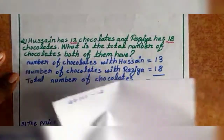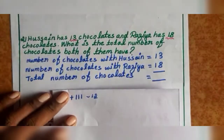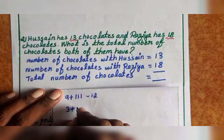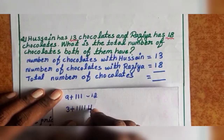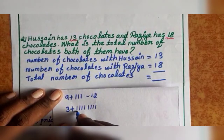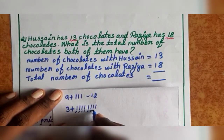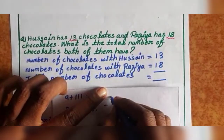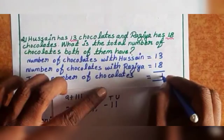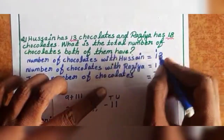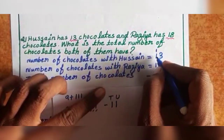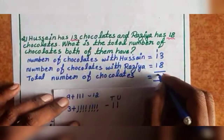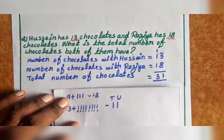So first add units: 3 plus 8. Draw 8 lines and count now from 3: 4, 5, 6, 7, 8, 9, 10, 11. So 3 plus 8 equals 11. In 11: 1 ten and 1 unit. Write unit 1 first. Balance 1 you can transfer to the tens place. So 1 plus 1 equals 2, then 2 plus 1 equals 3. Total 31 chocolates.